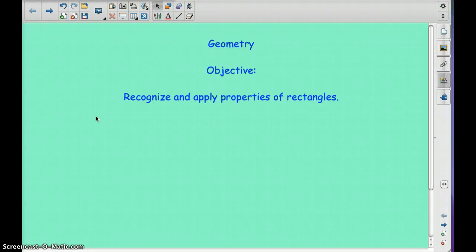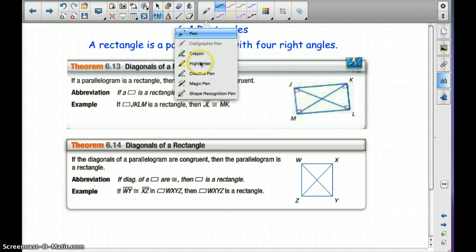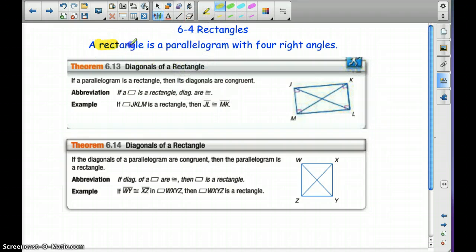Good morning geometry students. I hope all of you got to school safe and soundly with this unexpected weather. Today we're going to talk about rectangles, so four sides, and we're going to recognize and apply properties of rectangles. You're going to need your packet, and the definition of a rectangle is a parallelogram with four right angles. I need you to write these down in your packet. We have 6.13 and 6.14.